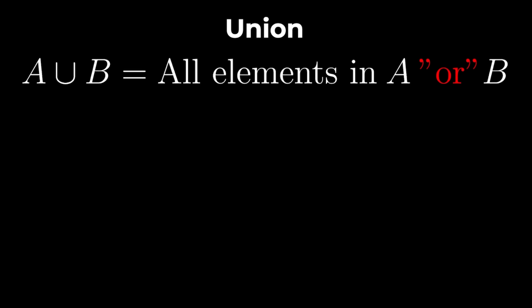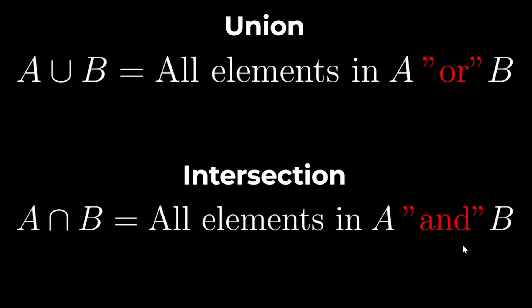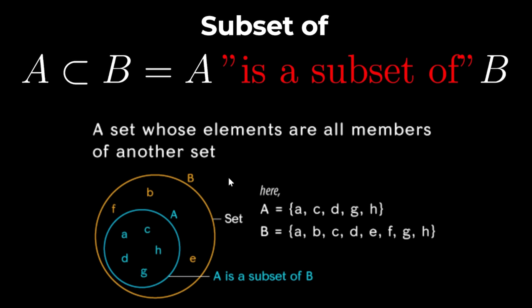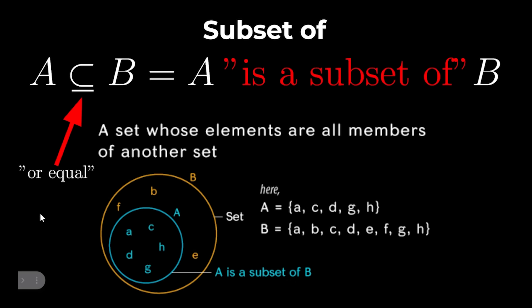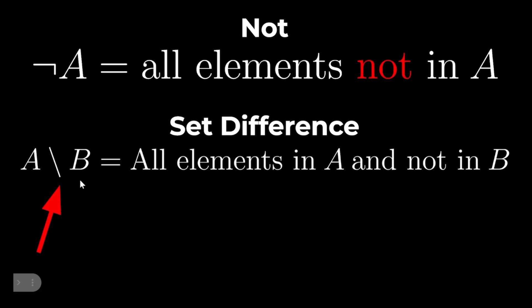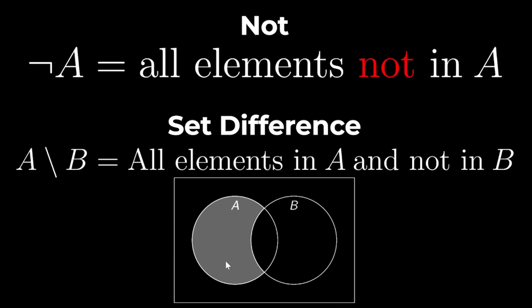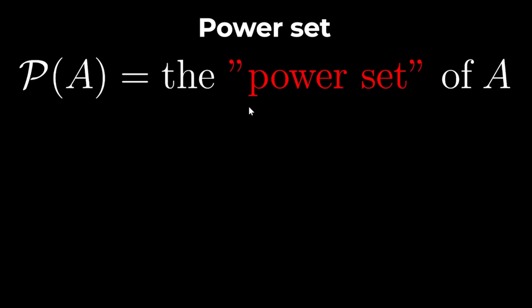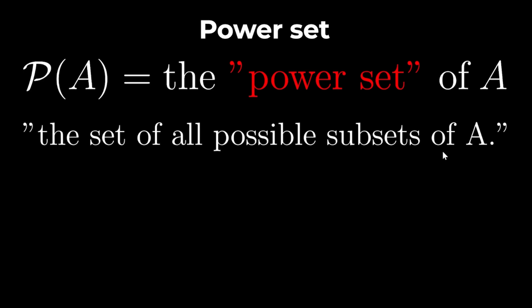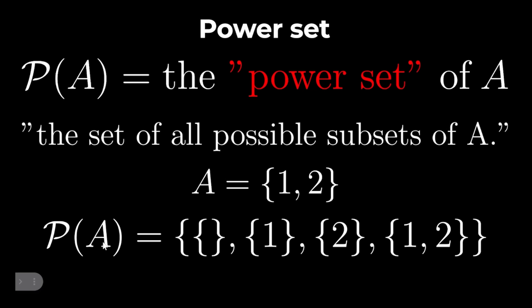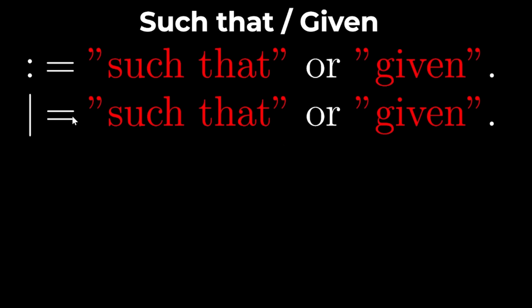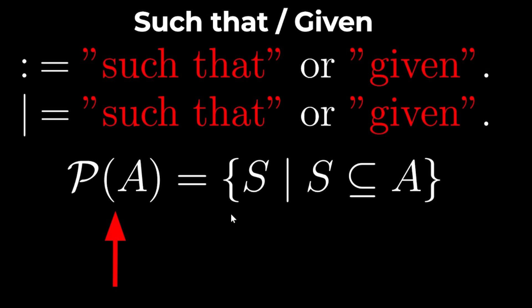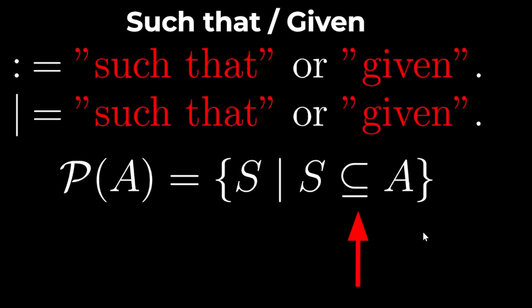A union B is all the elements in the set A or B and A intersect B is all the elements in set A and B. A is a subset of B if all the elements in A are also in set B. You can also put a line under the subset sign to signify that it's subset or equal to. This gun symbol means not and a backslash means the set difference which means all the elements in A that's not in B and it looks like this. This means and and this means or, this means for all and this means there exists. Curly P is used to denote the power set and the power set of A is just the set of all possible subsets of A. So if A is 1, 2 then the power set of A is the empty set, the set of 1, the set of 2 and the set 1, 2. A colon is used to represent such that or given and you can also use a vertical line. So for example the power set of A is just the set of all S such that S is a subset or equal to A.